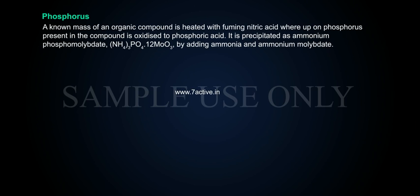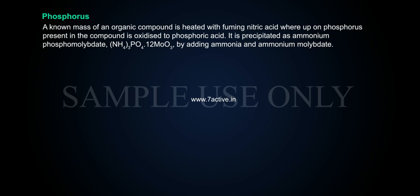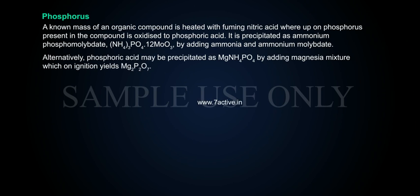Phosphorus. A known mass of an organic compound is heated with fuming nitric acid, whereupon phosphorus present in the compound is oxidized to phosphoric acid. It is precipitated as ammonium phosphomolybdate, (NH4)3PO4·12MoO3, by adding ammonia and ammonium molybdate. Alternatively, phosphoric acid may be precipitated as MgNH4PO4 by adding magnesia mixture, which on ignition yields Mg2P2O7.